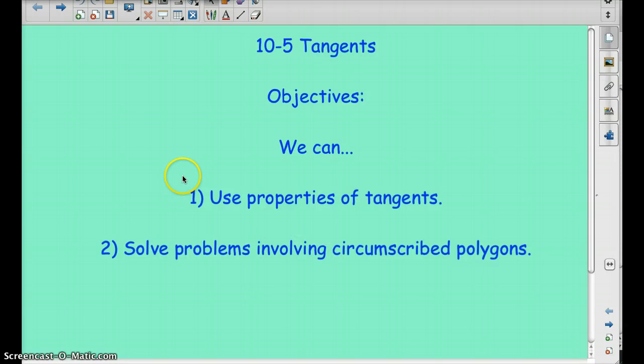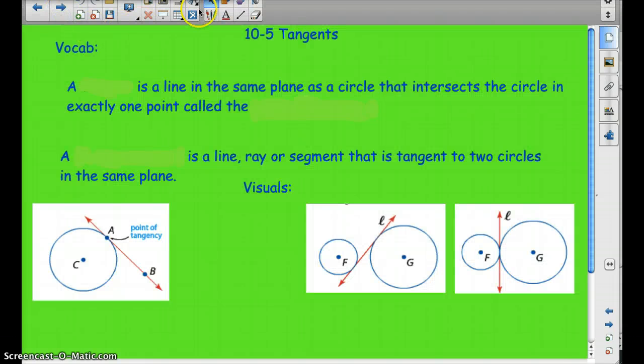Hello, geometry students. We're going to start 10-5 tangents. We're going to use properties of tangents and solve problems involving circumscribed polygons. So here's some vocab for you. A tangent is a line in the same plane as a circle that intersects the circle in exactly one point, called the point of tangency.